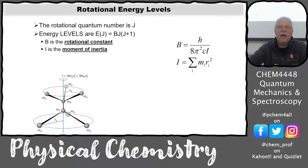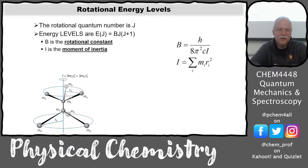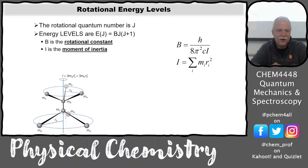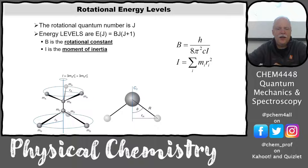B is the rotational constant, I is the moment of inertia, and r is the distance from the rotating axis. For ethane rotating around the z-axis, the moment of inertia is the sum of all masses times their distances from the rotating axis. With a methyl group you have three identical masses for MA, and this can be simplified a bit. The key point is that you have different moments of inertia for different types of rotation.